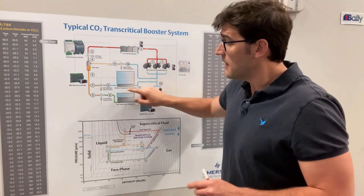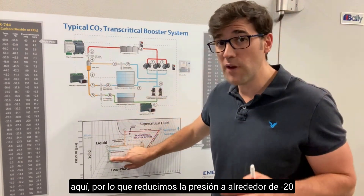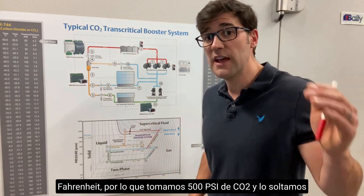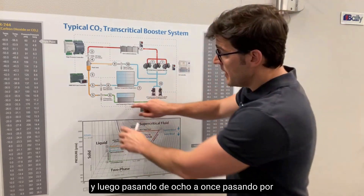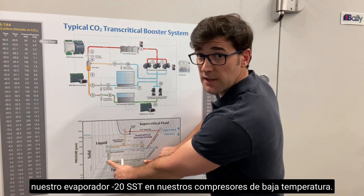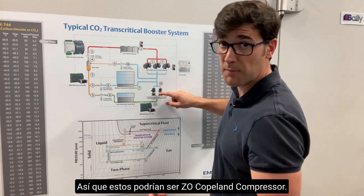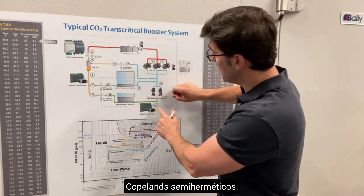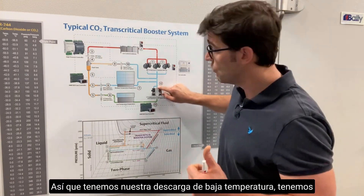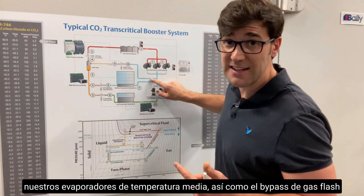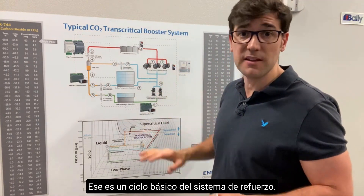From the flash tank receiver, we also feed the low temp metering devices, reducing the pressure all the way down to about 200 psi — from 34 bar down to 14 bar — corresponding to a minus 20°F SST. From 8 to 11, we go through the minus 20 evaporator into our low temp compressors, which could be Zeto, Copeland, or 4MLS semi-hermetic Copelands. From 11 to 12 is the low temp discharge, which feeds back into the medium temp suction along with the medium temp evaporators and flash gas bypass. That's how it cycles — that's your basic booster system cycle.